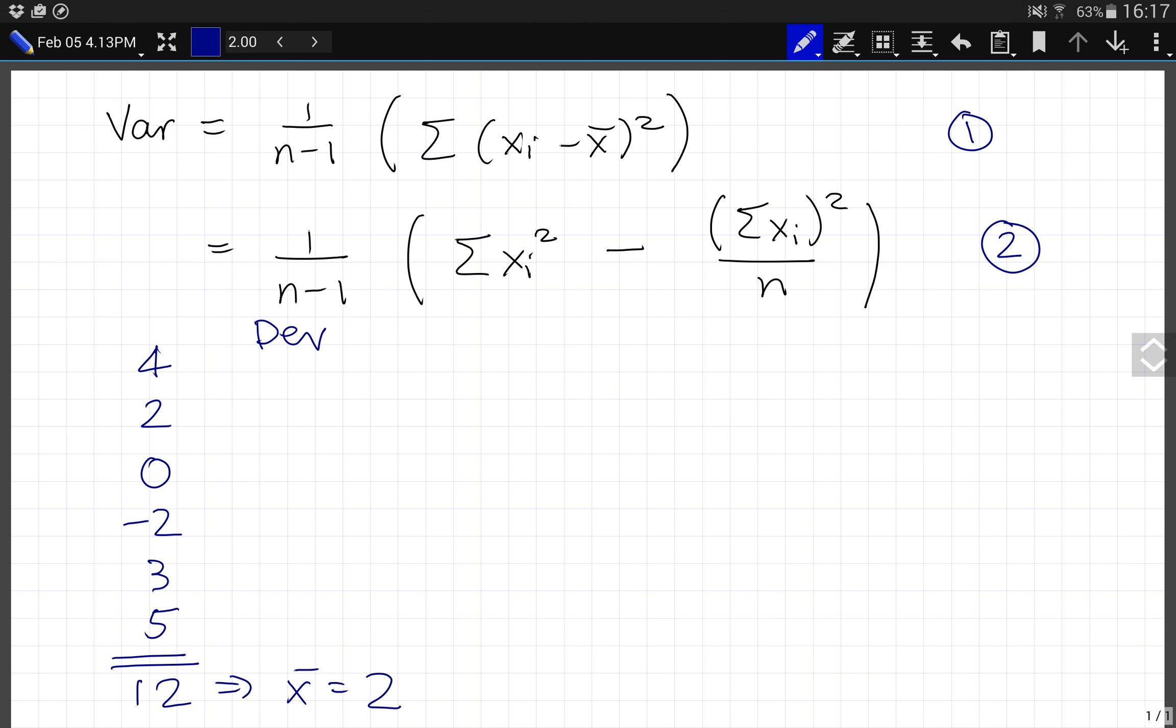which implies that the mean is just 2. So the deviations here are plus 2, 0, minus 2, minus 4, 1, and 3.